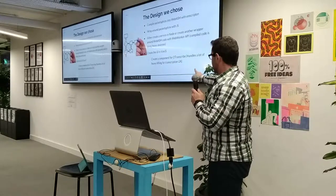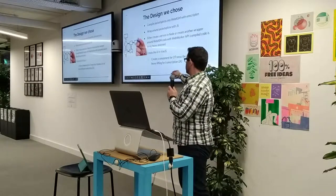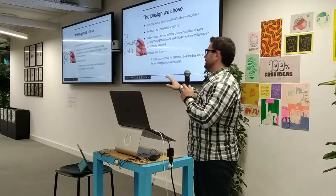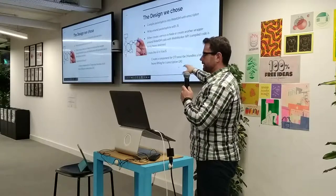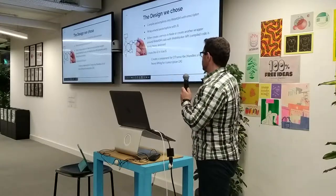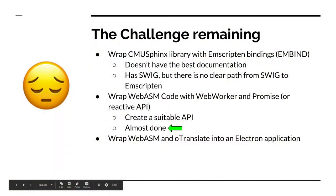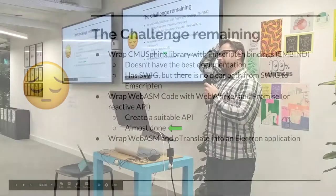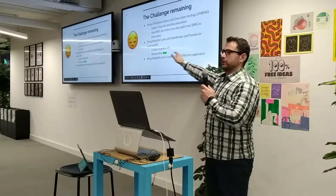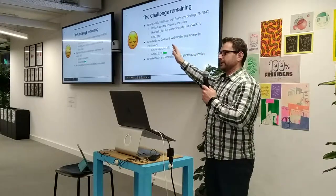Another good thing that comes with the JavaScript ecosystem is that someone has already dedicated their time to create the transcribing tool we need, so we just need to stick those two pieces together. As for the challenge remaining — it is essentially everything. Currently, we are able to wrap the CMU Sphinx library with Emscripten bindings because someone else has already done it, but it's not perfect — it's buggy.